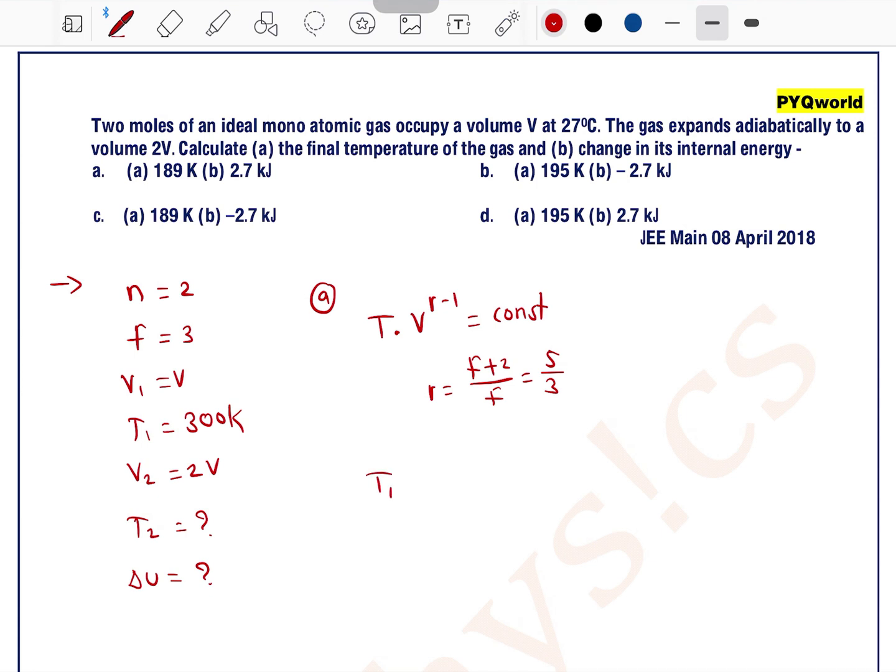So this can be written as T1 into V to the power 5 by 3 minus 1 is equal to T2 into V to the power 5 by 3 minus 1. So T1 is 300, V1 is V to the power 2 by 3. T2 is what we don't know, and V2 is 2V.